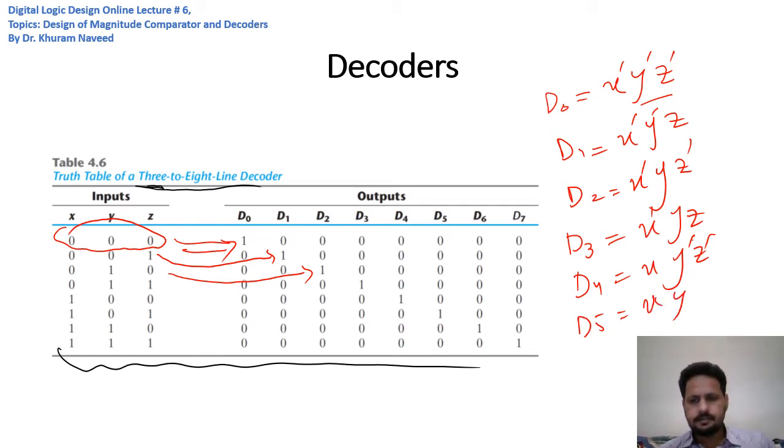xy'z. For D₆ we have xyz', and for D₇ we have xyz. These are the individual expressions of each output.